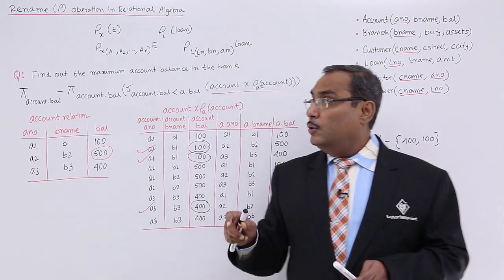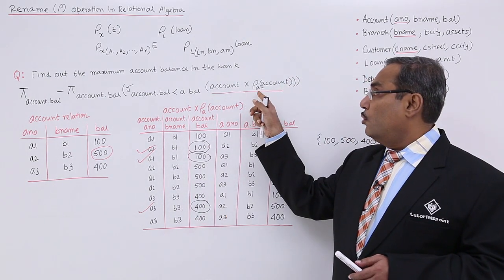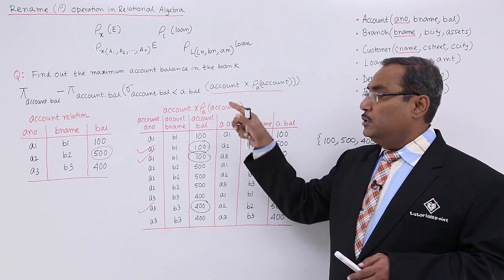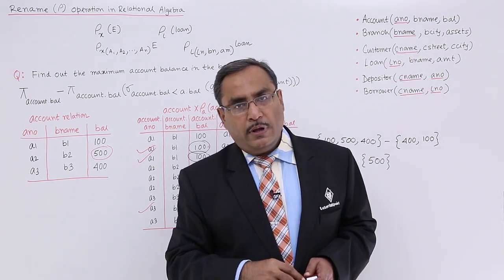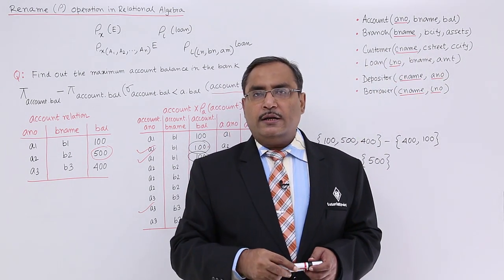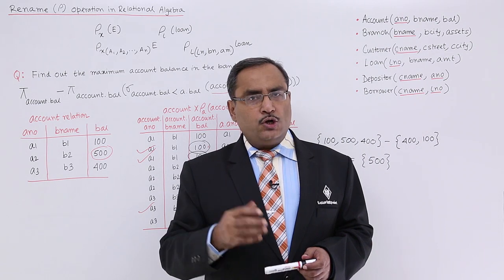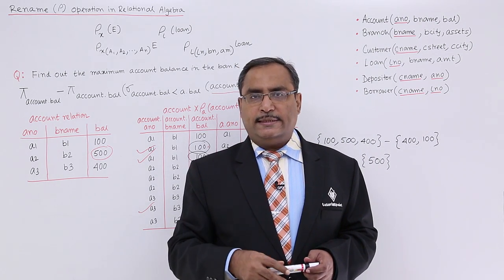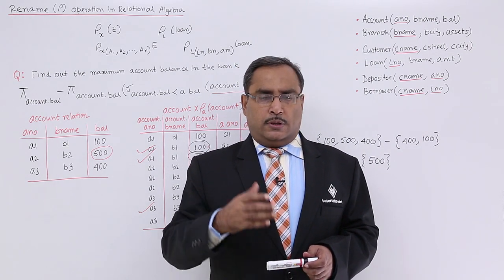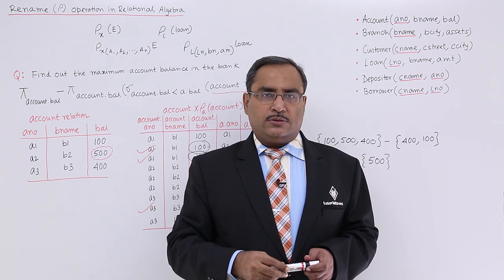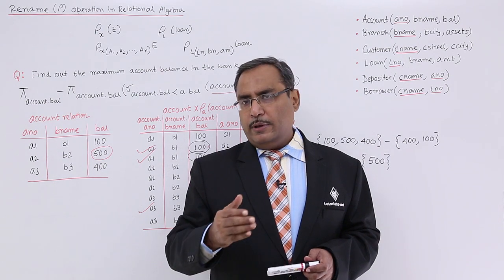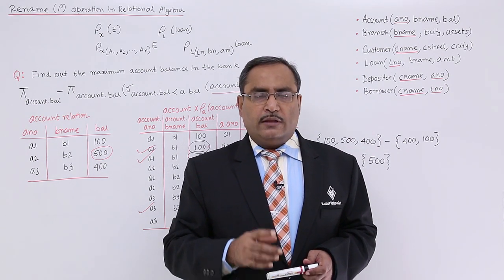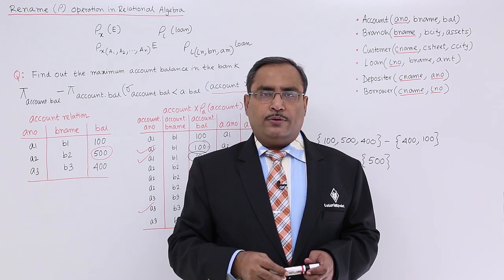Without the rho (rename) operator, this relational algebraic form cannot be written, because we cannot do a Cartesian product between the same relations without renaming at least one of them. Thanks for watching this video.